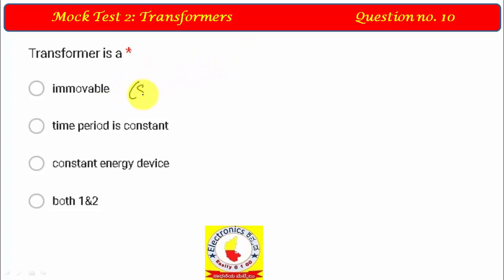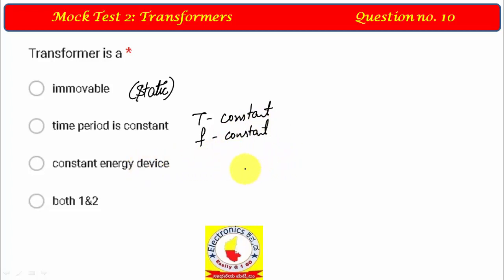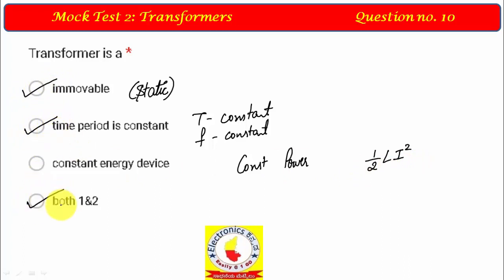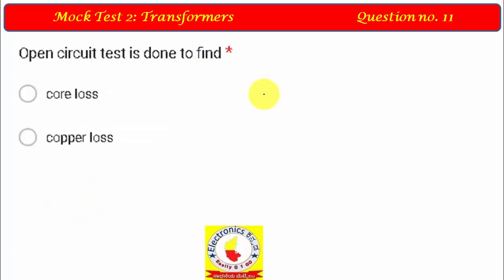Question 8: Properties of a transformer — it is static (immovable). Time period is constant, so frequency is constant. It is not a constant energy device; it is a constant power device. Current in the primary winding is not equal to current in the secondary winding. Both properties 1 and 2 are correct, and to be safe, options 1 and 2 are selected.